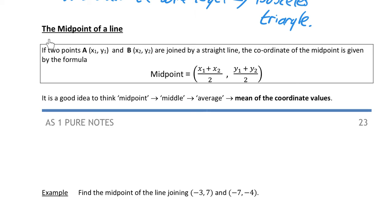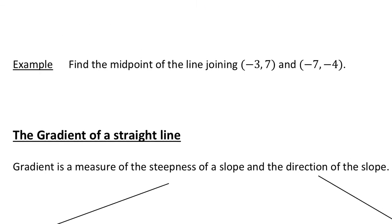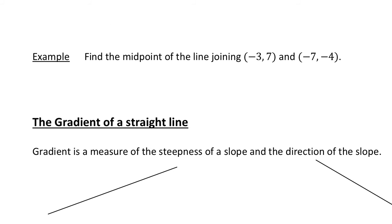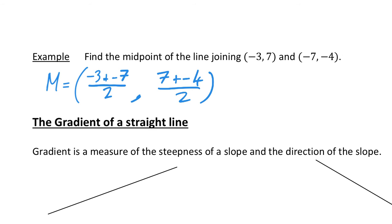The next topic is the midpoint of a line. For points A(x₁, y₁) and B(x₂, y₂), you take the average of the x values and the average of the y values. So for the example: find the midpoint of the line joining (-3, 7) and (-7, -4). The midpoint M has x coordinate (-3 plus minus 7) divided by 2, and y coordinate (7 plus minus 4) divided by 2.